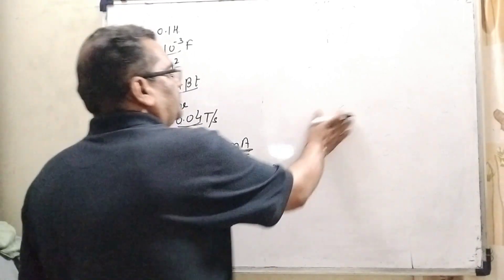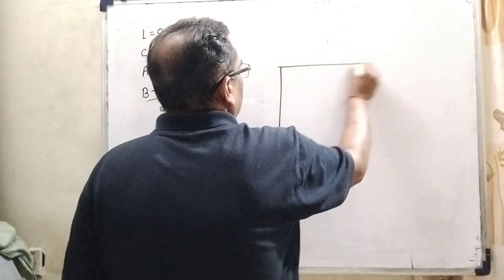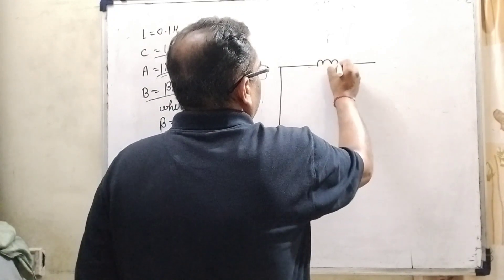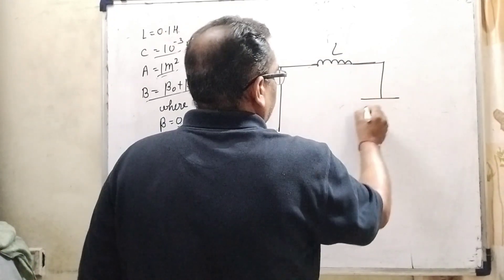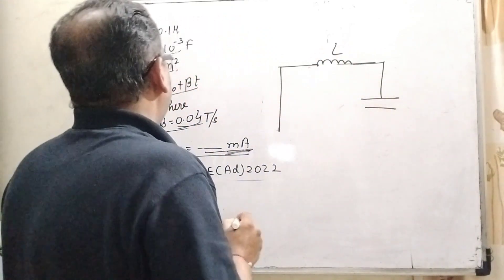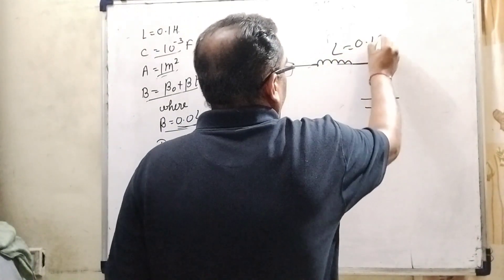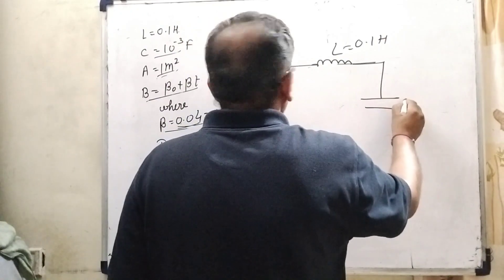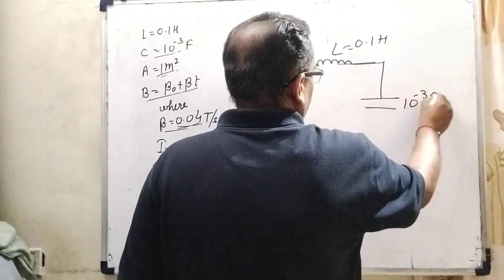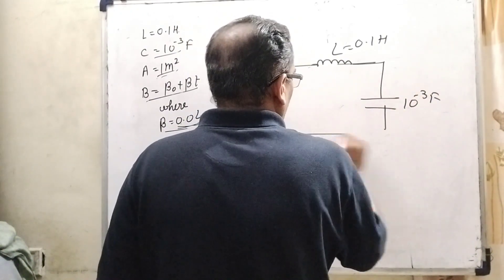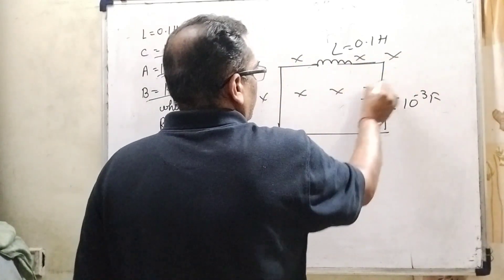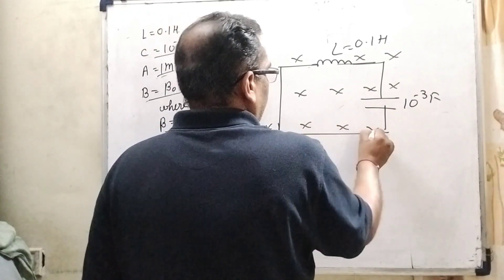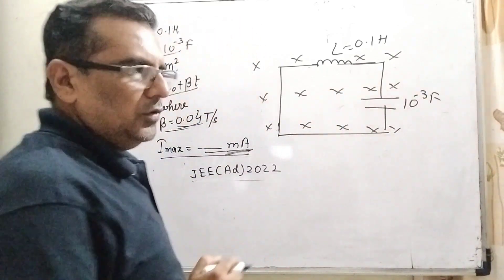In this question, we have given a circuit consists of inductance coil and a capacitor. Here inductance is 0.1 Henry and capacitance is given that 10 raised to the power minus 3 Farad. This whole circuit is kept in uniform magnetic field, and its direction is inwards inside the board.